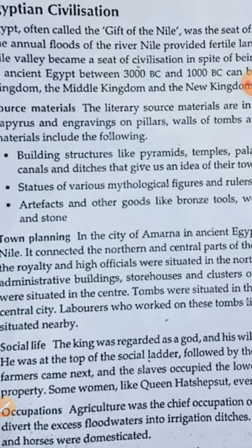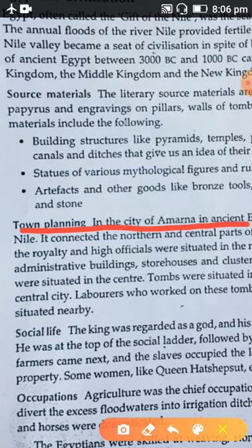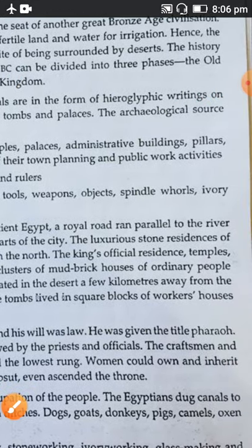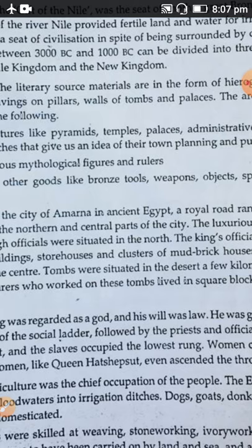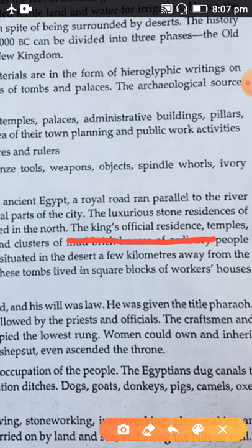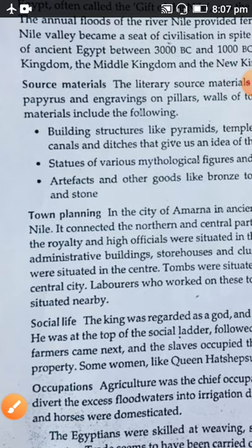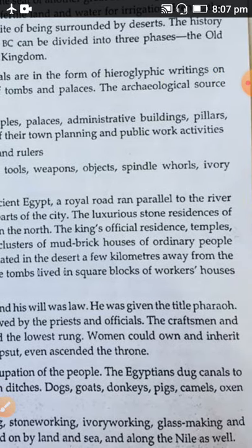Now, town planning — very important. In the city of Amarna in ancient Egypt, a royal road ran parallel to the River Nile, connecting the northern and central parts of the city. The most important buildings in Egyptian civilization included the king's official residence, temples, administrative buildings, storehouses, and clusters of mud brick houses for ordinary people.